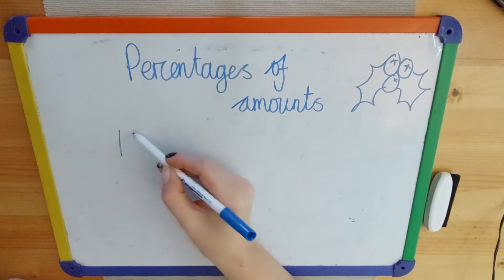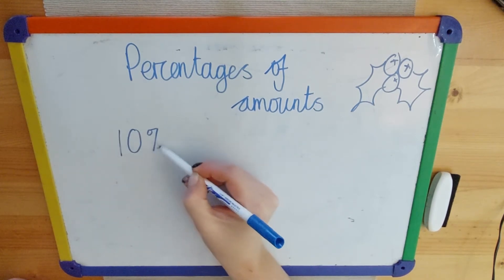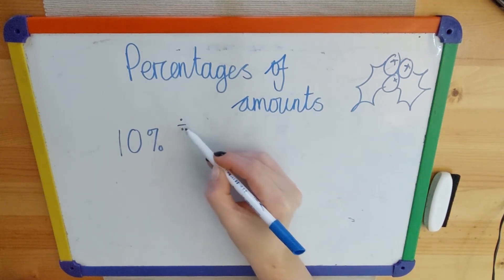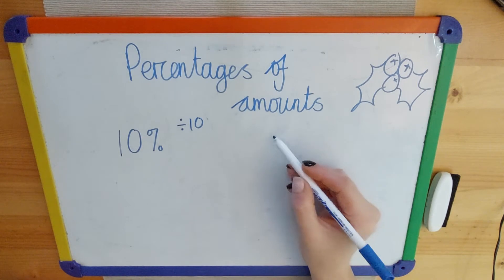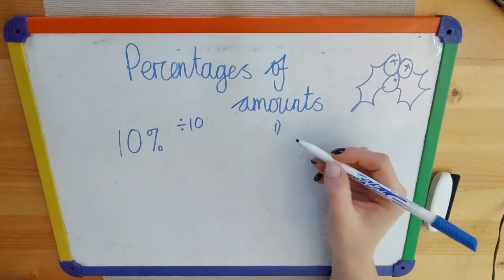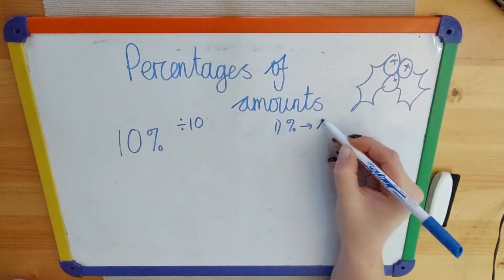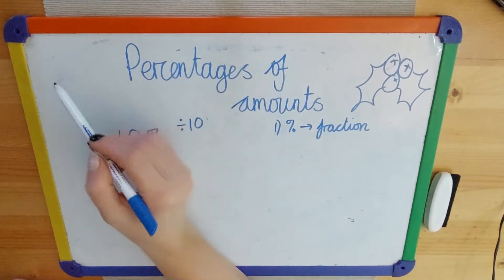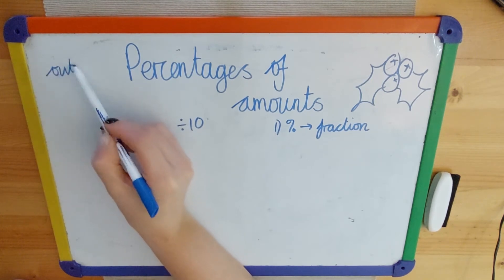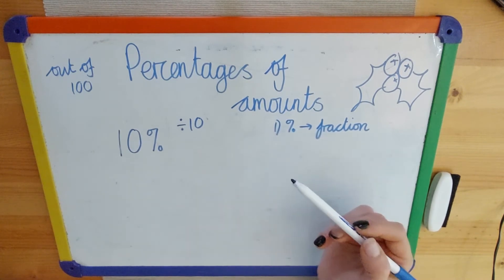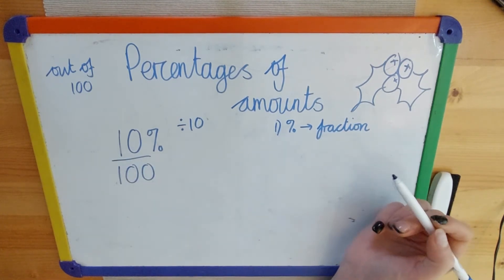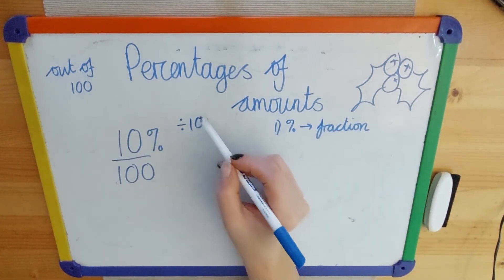So say, for example, you wanted to find 10% of an amount. To find 10% of an amount, all we need to do is divide the number by 10. But there are some steps that we need to follow. The first step is we need to convert the percentage into a fraction, and we need to remember that percent means out of 100. So any percentage is always going to be, as a fraction, over 100. So, for example, 10% is always going to be 10 over 100.